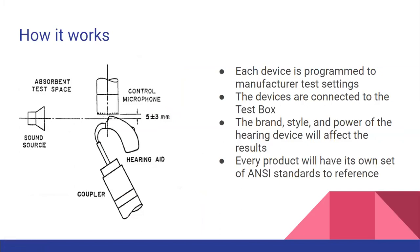The hearing aid is set up in the test box, as shown in the picture here. There is a microphone for measurements, a speaker for sound, and what we call a coupler that represents the ear. The hearing aid is programmed to the manufacturer test settings through the programming software. Each hearing aid will have its own set of ANSI standards — the brand, style, and power of the hearing aid will determine which set of standards you use to compare the results and make sure the hearing device is meeting the requirements.